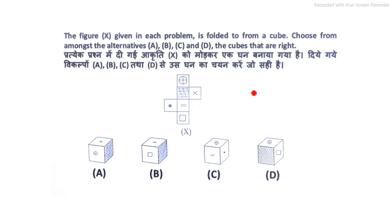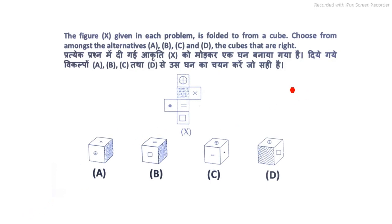Moving to the next question: a figure with symbols is given, and we have to find what cube can be made from it. We do the same thing as before — identify the opposite pairs from the layout. The symbol in position one is opposite to the equals sign. The dot symbol is opposite to the cross. The shaded region is opposite to the box symbol.